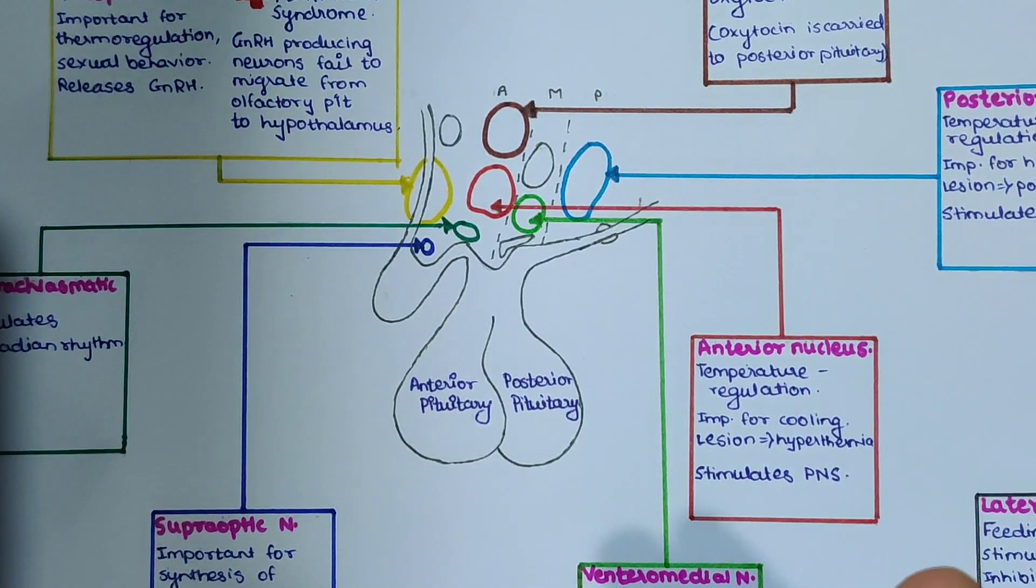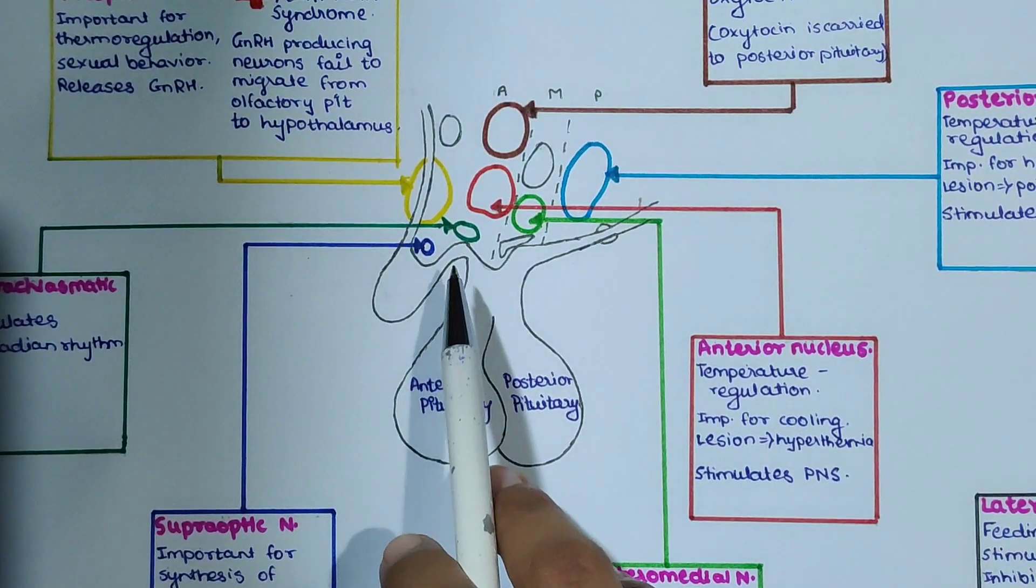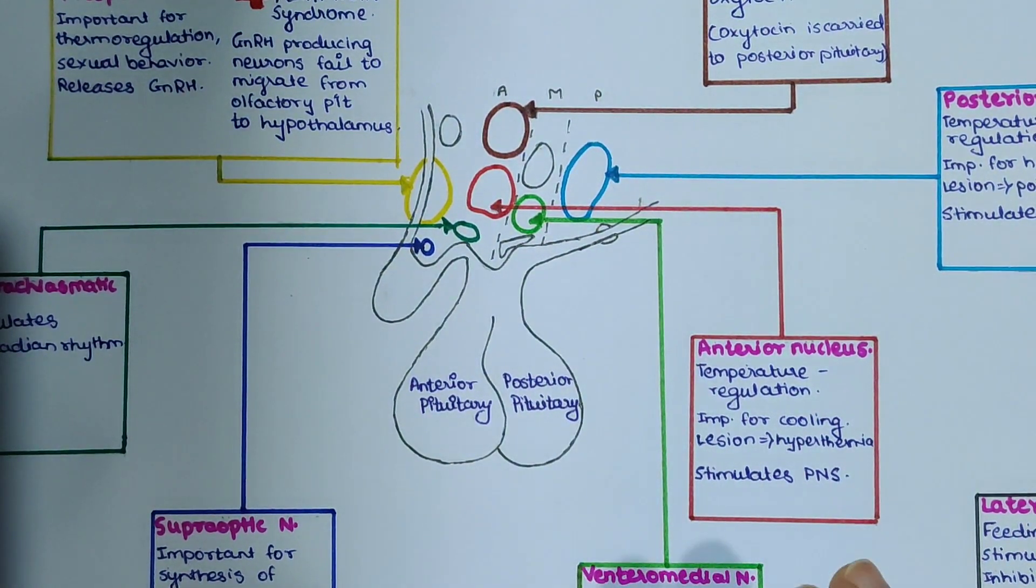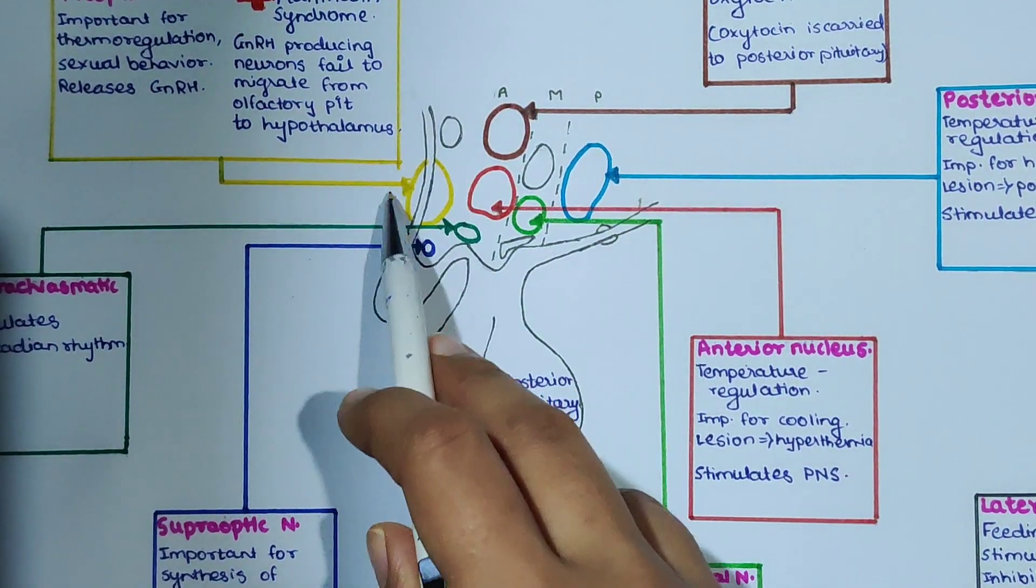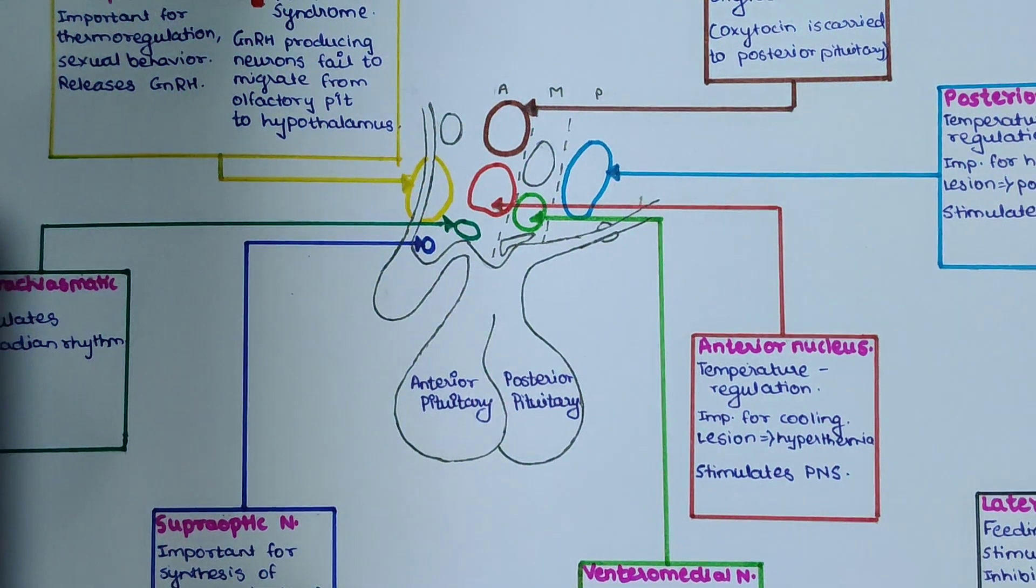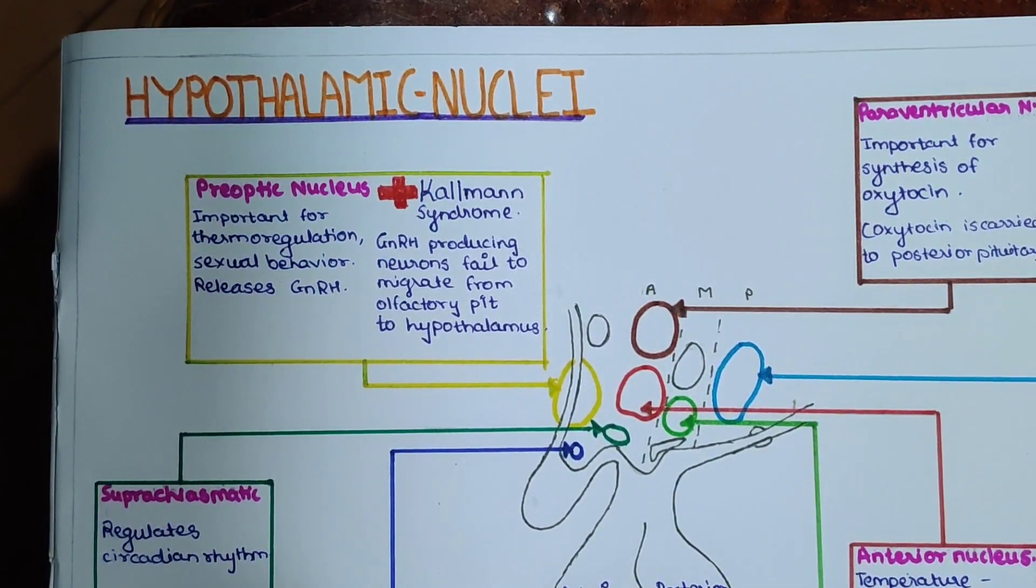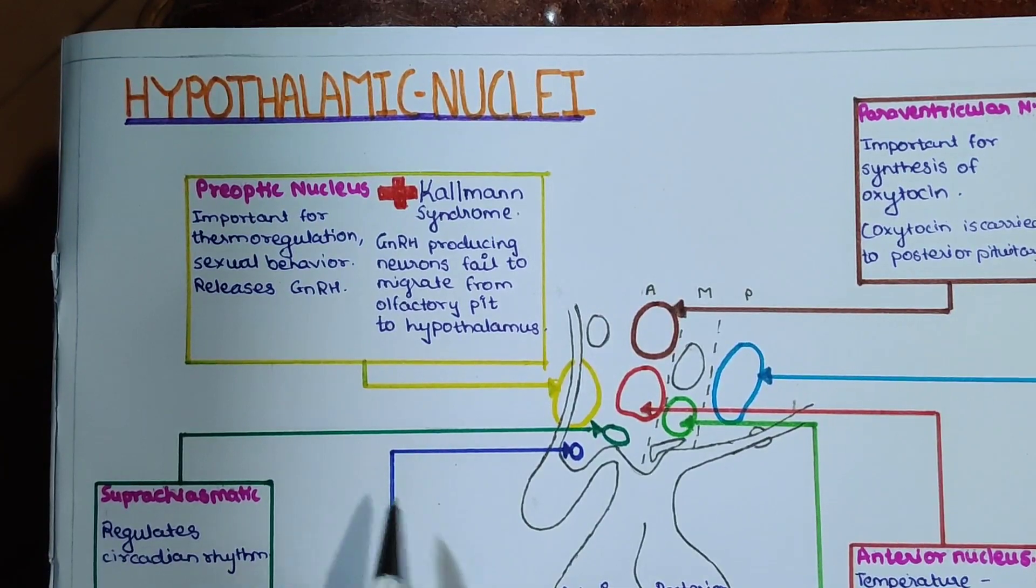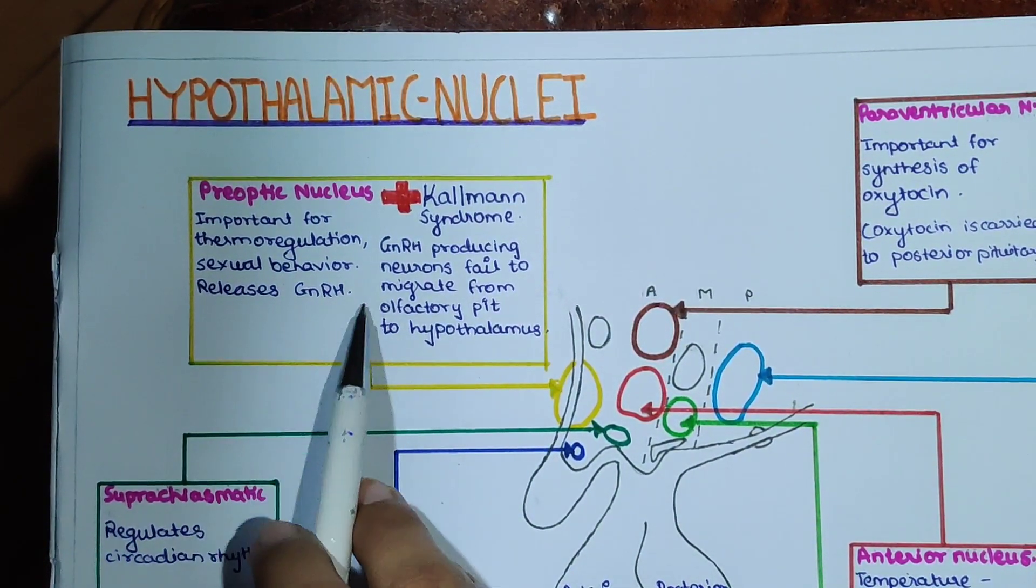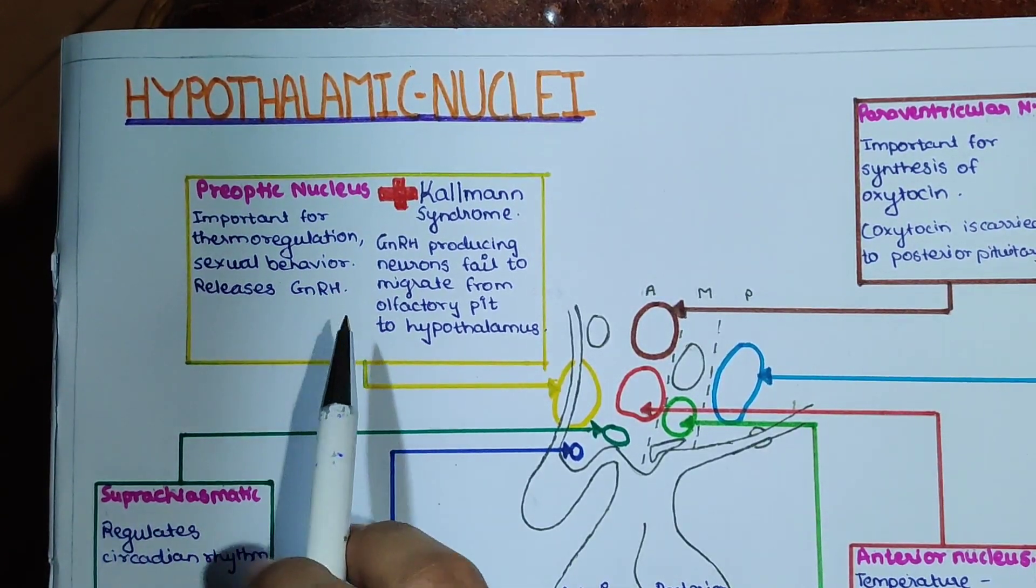It also regulates hunger. I have highlighted some important hypothalamic nuclei with different colors. We are going to go through them one by one. First, let's start with pre-optic nucleus, shown here in yellow. Pre-optic nucleus is important for thermoregulation, sexual behavior, and it releases GnRH. GnRH will further stimulate our anterior pituitary to release FSH and LH.